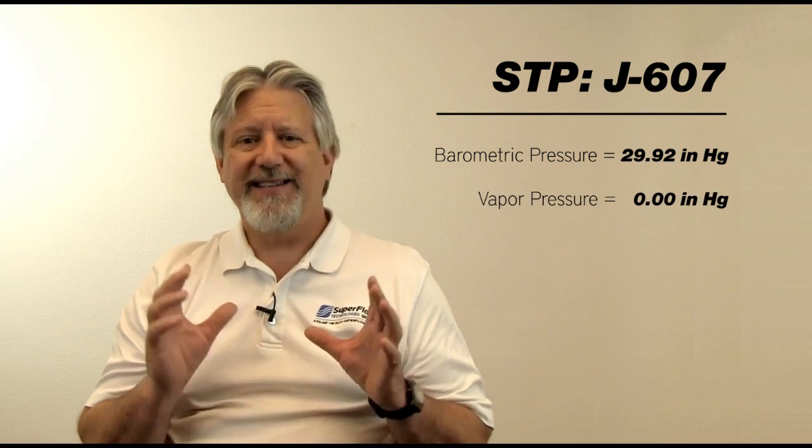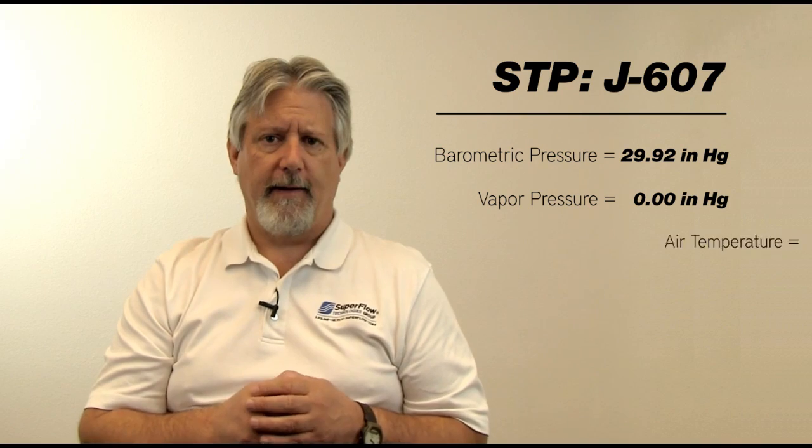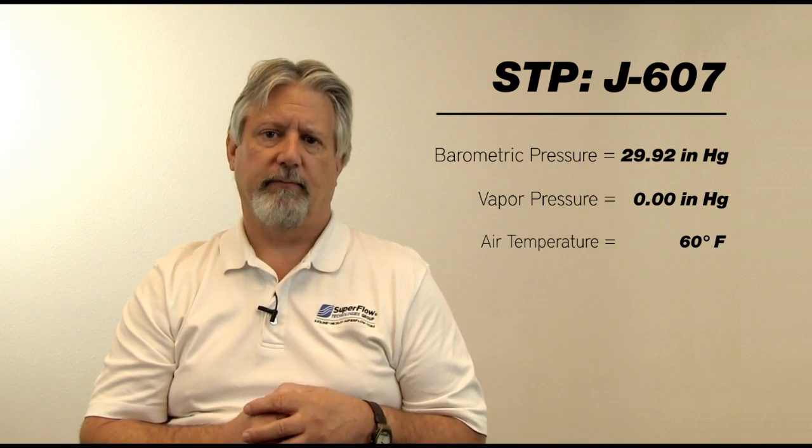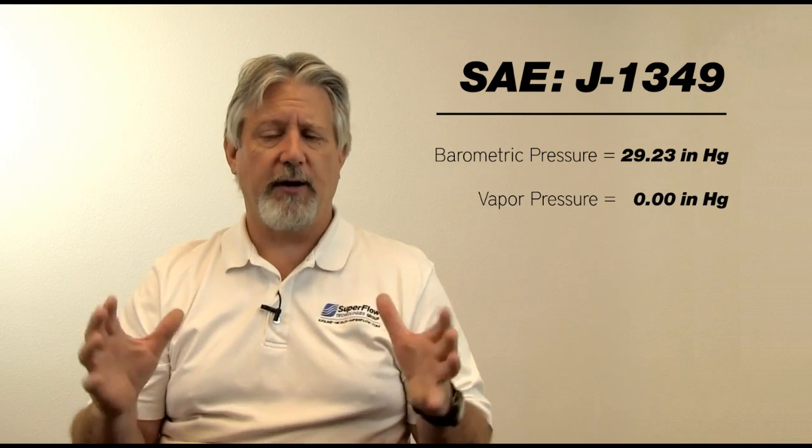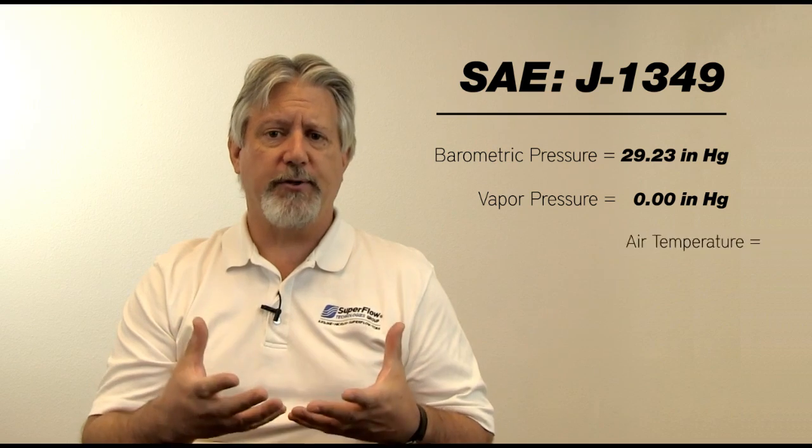Both SAE J1349 and J607 correct based on three atmospheric conditions: barometric pressure, vapor pressure, and air temperature. For J607 (STP), the reference values are: barometric pressure 29.92 inches of mercury, vapor pressure 0 inches of mercury (no water in the air), and air temperature 60 degrees Fahrenheit. For the J1349 formula, barometric pressure is 29.23 inches of mercury — about 800 feet above sea level — vapor pressure is again 0, and air temperature is 77 degrees Fahrenheit.